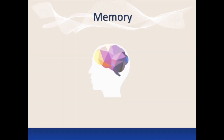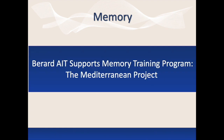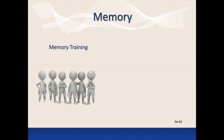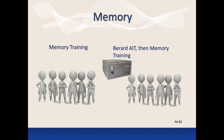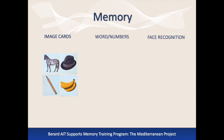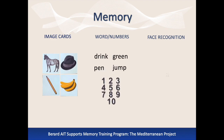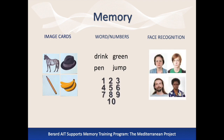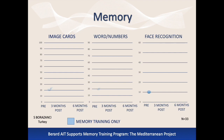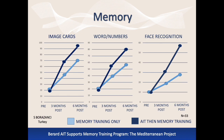Memory skills are critical to learning and achieving greater success in school and daily life activities. This study provided memory training to a group of 33 individuals. Another group of 33 first received Berard AIT and then memory training. Memory skills were measured on three different tasks: memory for images (auditory and visual), memory for words (auditory), and memory for names and faces (auditory and visual). Subjects who received memory training only did show improvement at three and six months. However, subjects who received Berard AIT before memory training demonstrated significantly greater success on all three types of memory tasks.